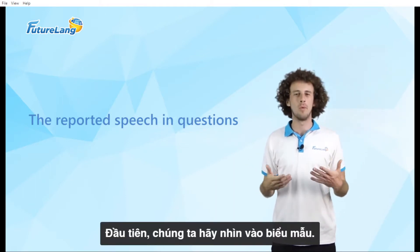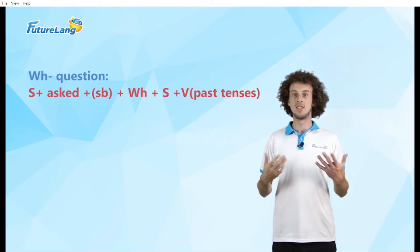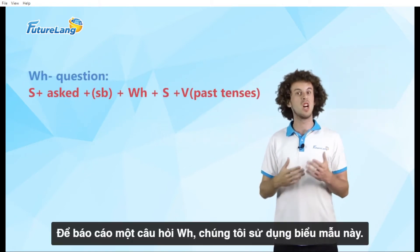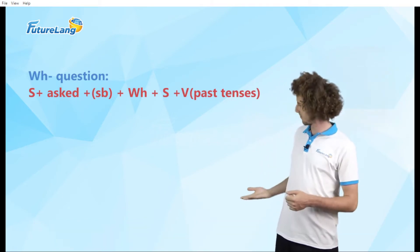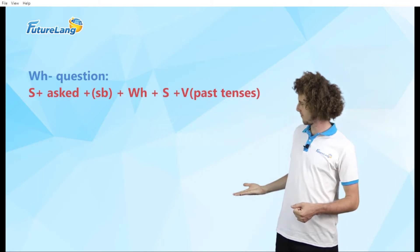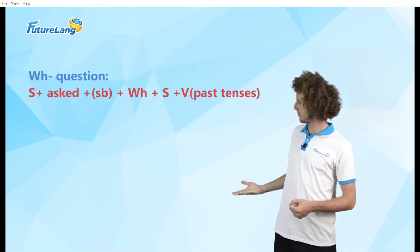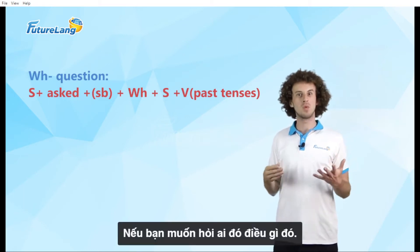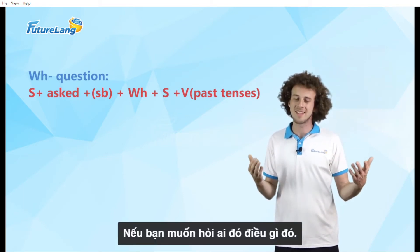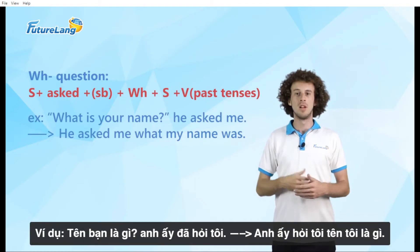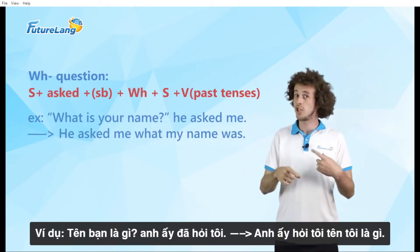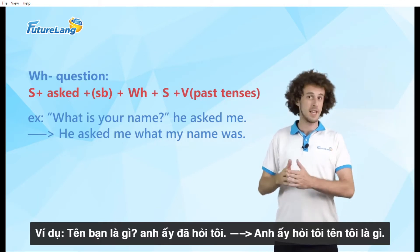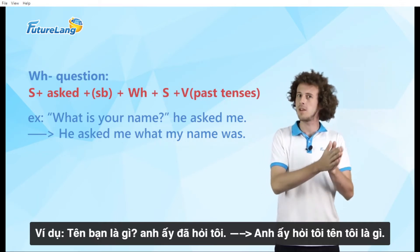First, let's take a look at the forms. To report a WH question, we use this form. If we want to ask somebody something, for example: 'What is your name?' — 'He asked me' changes to 'He asked me what my name was.'